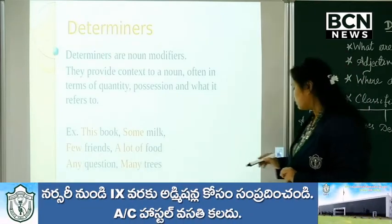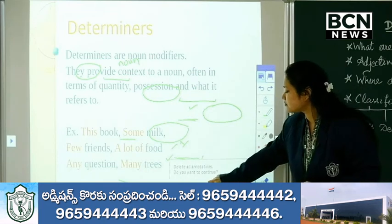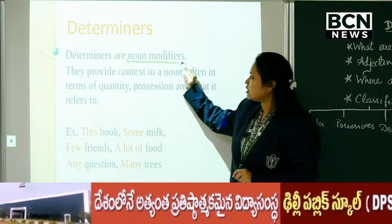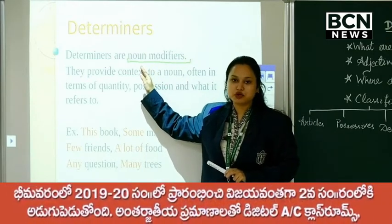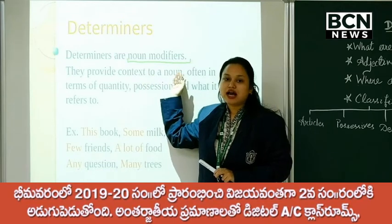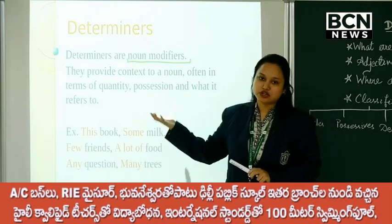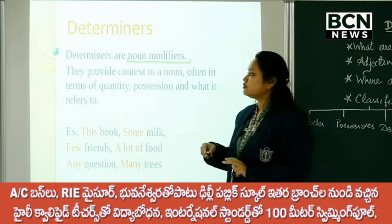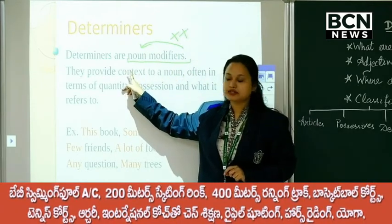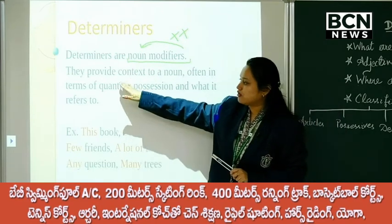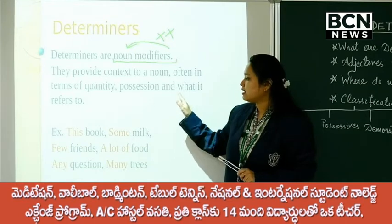Determiners are noun modifiers. Something is being modified — noun is being modified. How are we modifying the noun? We are fixing some value, fixing the particularity of the noun, sometimes the value of the noun, sometimes the amount of the noun. Modifying means something is being added to the noun. They provide context to a noun often in terms of quantity, possession, and what it refers to.